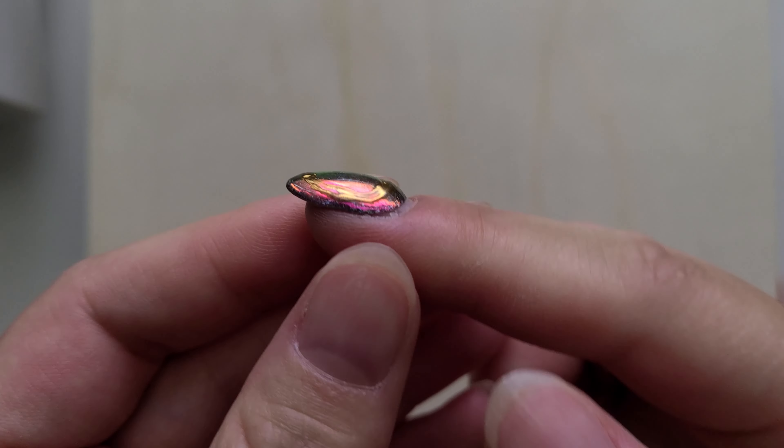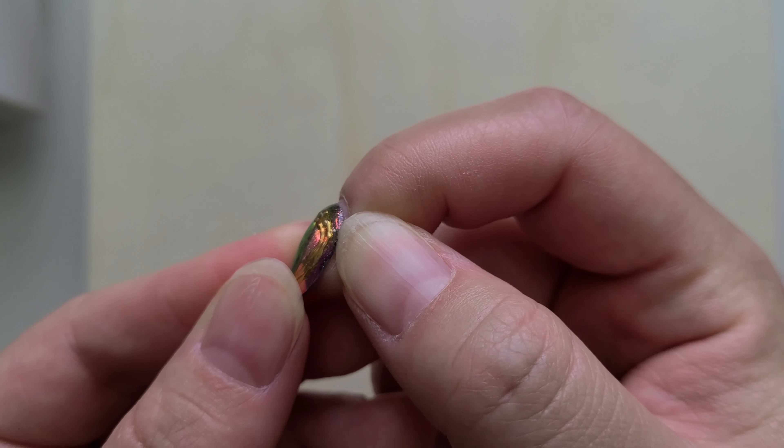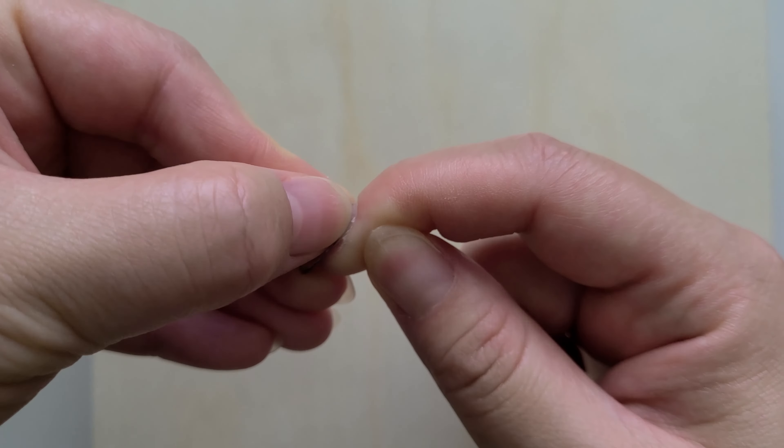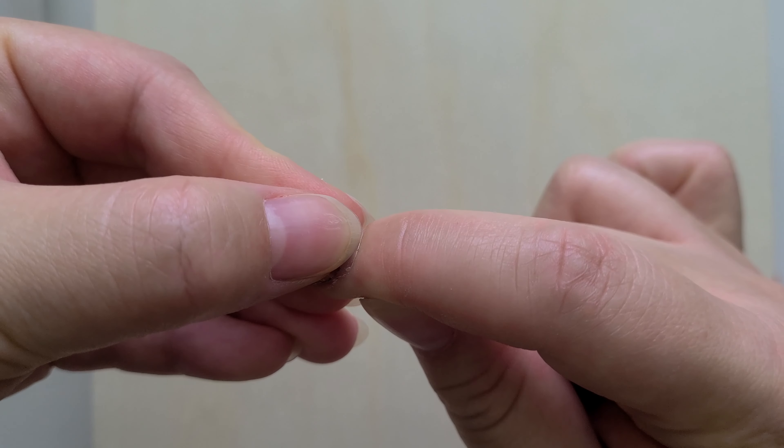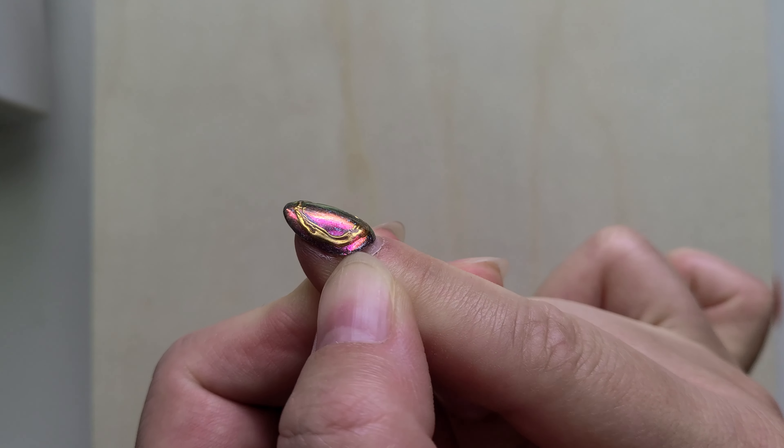I'm sad to see this beautiful chrome go but it is lifting a lot around the cuticle area and side walls, so I'm going to show you the complete gel removal process taking it down back to the natural nail.